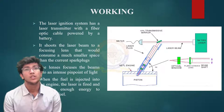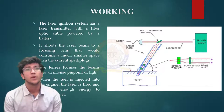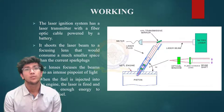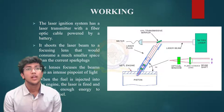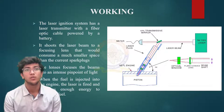Let's see the working of the laser ignition system. It has a laser transmitter which transmits the laser via a fiber optic cable powered by a battery. It shoots the laser into a focusing lens that occupies much less space than a conventional spark plug. The lens focuses the beam into an intense hot point of light. When the fuel is injected into the engine, the laser is fired and produces enough energy to ignite the fuel.